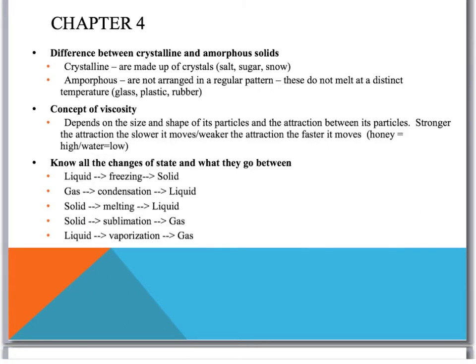Difference between crystalline and amorphous solids. Again, this was in the book, a part of your reading. Crystalline are made up of crystals, and you should be able to see that root word in there. Amorphous are not arranged in a regular pattern. They do not melt at a distinct temperature. So you have glass, plastic, and rubber as examples.